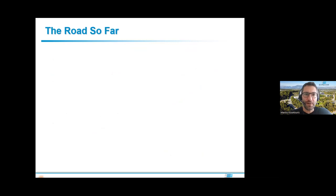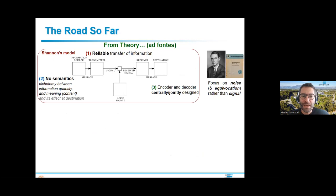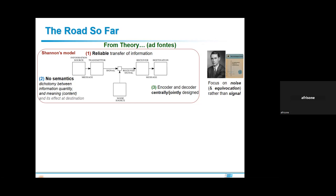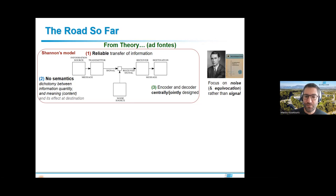Let's go back to the basics. Virtually all communication systems and networks we build today are based on Shannon's seminal work. He stated that the communication problem is essentially about reliable transfer of information: given an information source, send it to the receiver and reconstruct the information flow as accurately as possible. He also said the semantic interpretation — whether the message has meaning or impacts the behavior of the destination — is irrelevant to the problem.